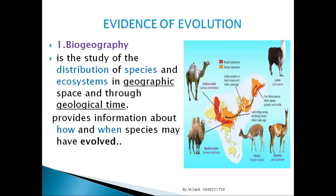Biogeography also explains why humans have different skin colors. People are located in different environments, and those from hot areas have different skin colors. This helps us understand how these organisms evolved.